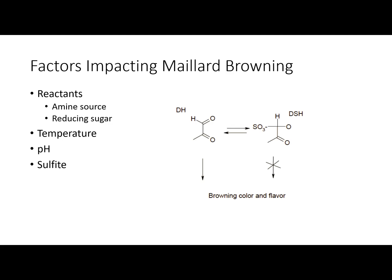There are a number of factors that can impact the rate of Maillard browning. The first is the reactants — the concentrations of our amine sources and reducing sugars will impact the rate of this reaction, so if we have more of those we generally expect a faster reaction. The identity of the reactants can also affect that rate; for example, lysine tends to react much faster than other amino acids to form Maillard products.